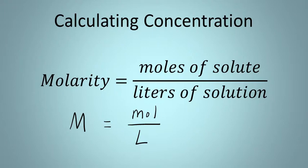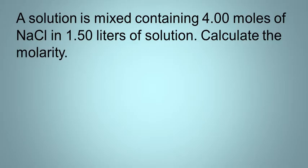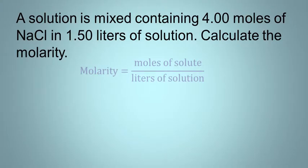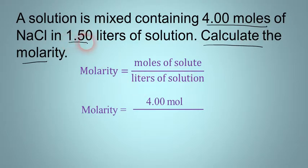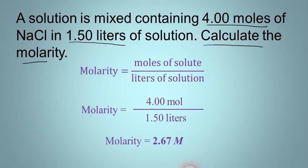Let's try a couple of examples. We have a solution containing 4.00 moles of sodium chloride in 1.50 liters of solution — calculate the molarity. We use the equation: molarity equals moles divided by liters. We're solving for molarity, moles is 4.00 in the numerator, and liters is 1.50 in the denominator. When you divide that, you should get an answer of about 2.67 molar.